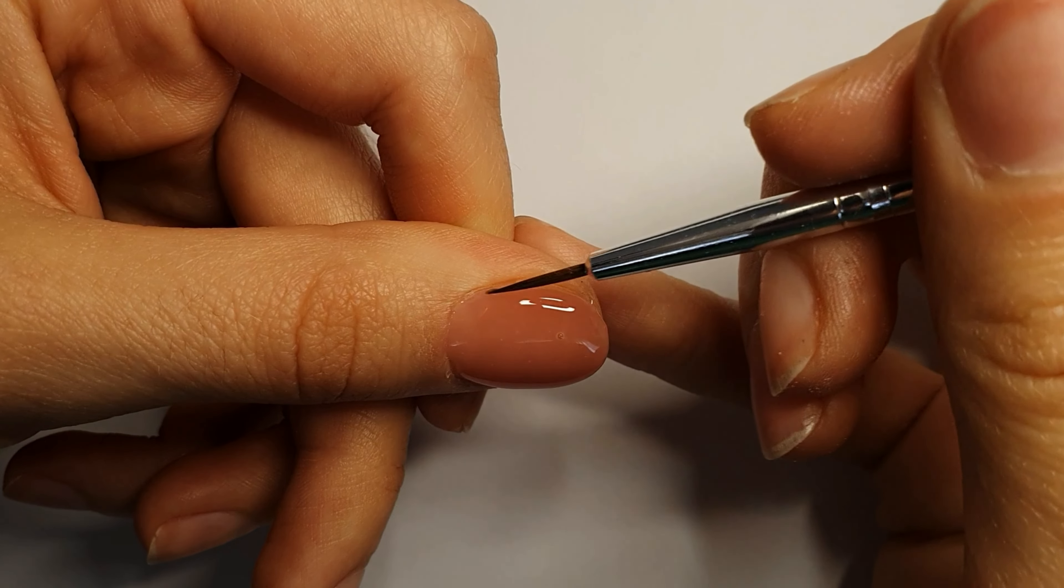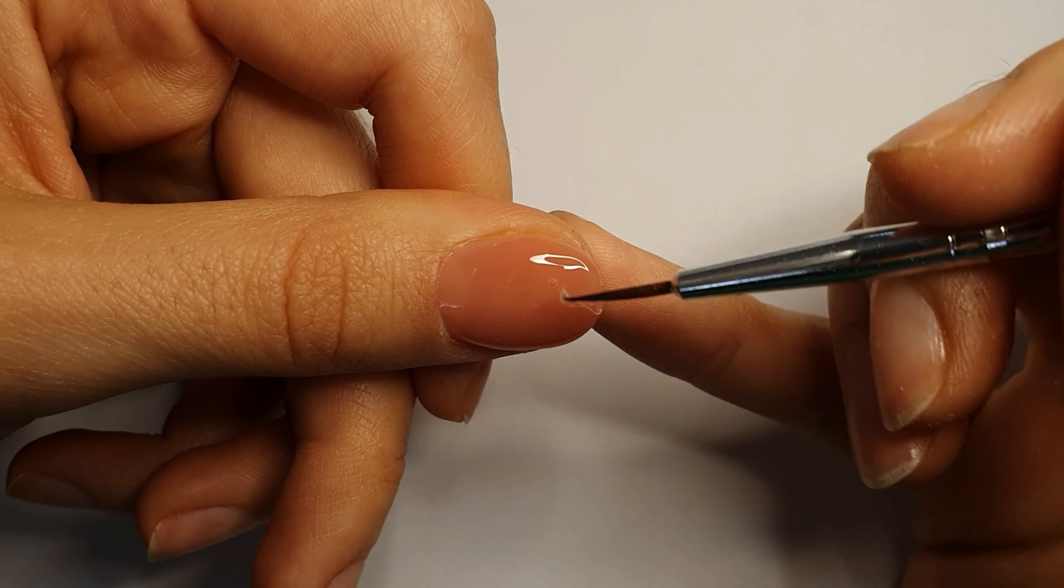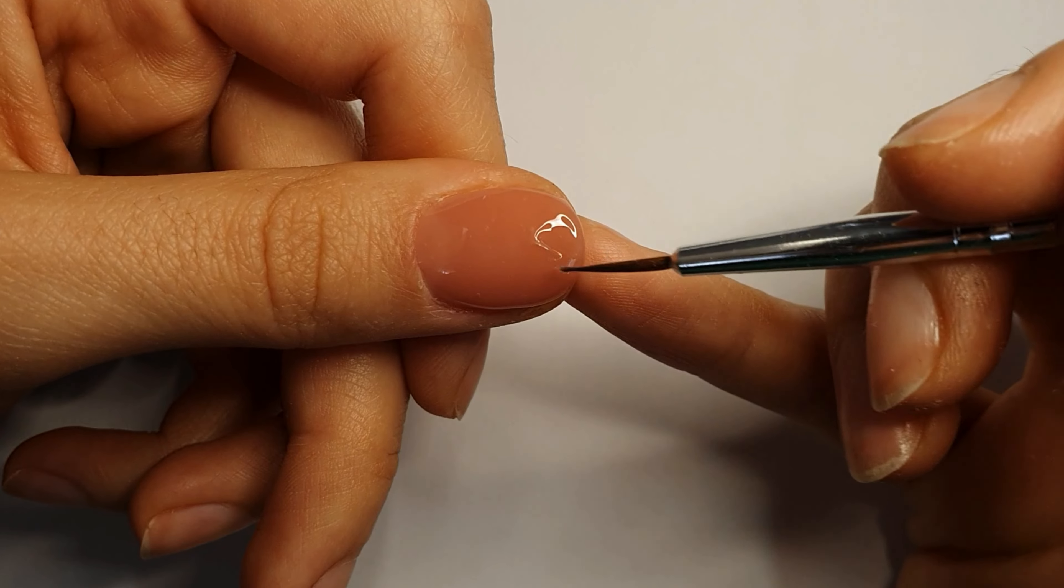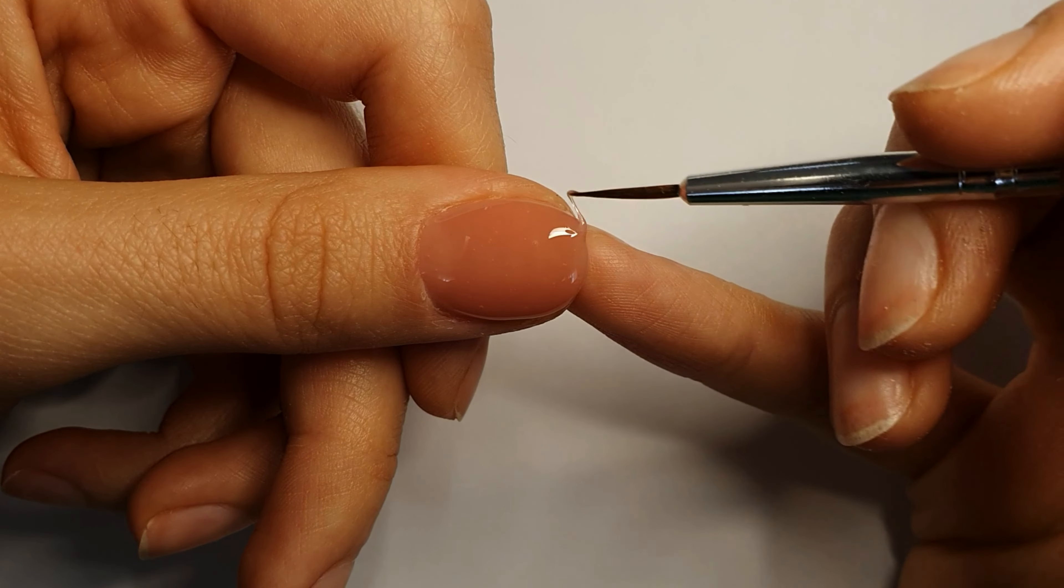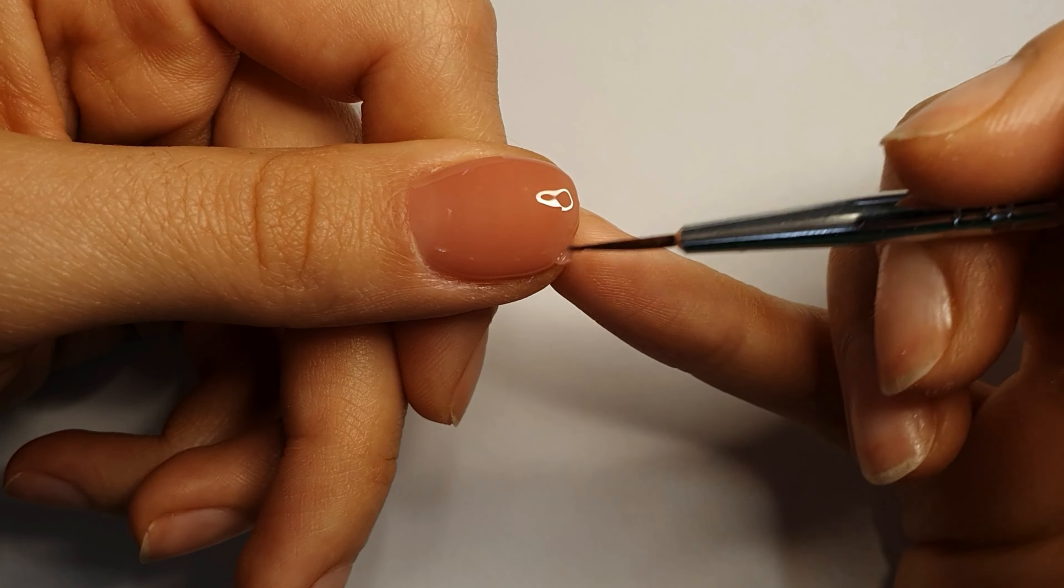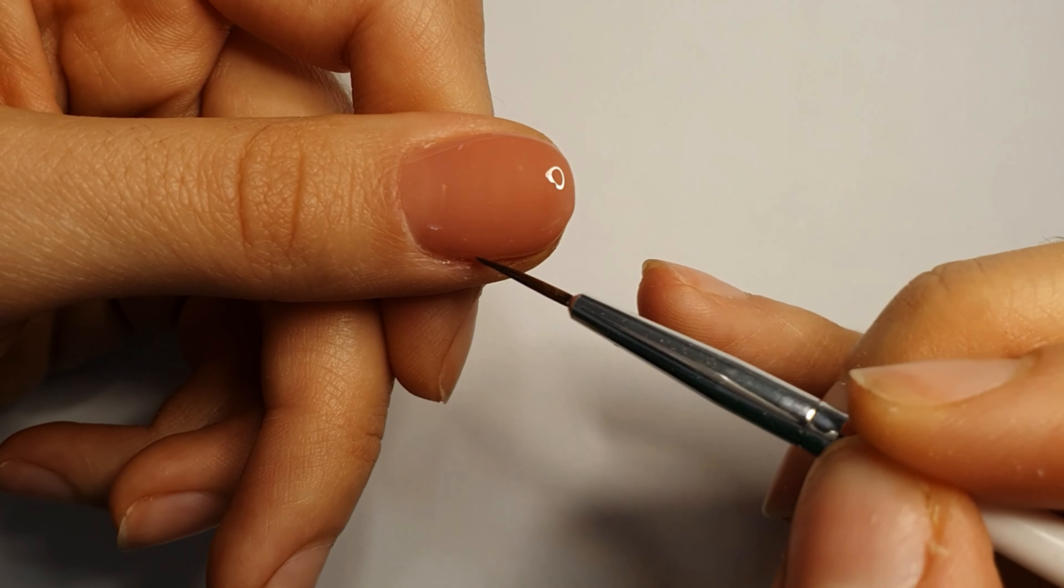You should do this until you know that every surface of the nail is covered with builder gel, of course not touching your skin. Make sure you don't leave any bumps or any bubbles of air because sometimes it happens.